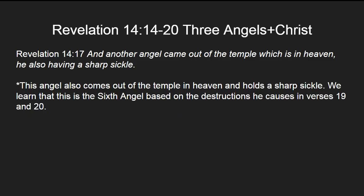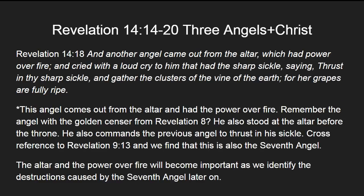Another angel came out of the temple which is in heaven, he also having a sharp sickle. This angel also comes out of the temple in heaven and also has a sharp sickle. We learn that this is the sixth angel, based upon the destructions he causes later in verses 19 and 20. And another angel came out from the altar, which had power over fire, and cried with a loud cry, 'Thrust in thy sharp sickle, and gather the clusters of the vine of the earth, for her grapes are fully ripe.'